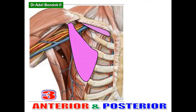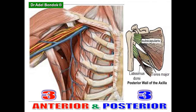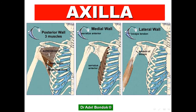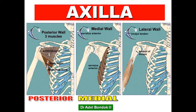The posterior wall of the axilla is formed of three muscles: subscapularis above, and teres major and latissimus dorsi below. The medial wall is formed of the ribs, intercostal muscles, and serratus anterior.